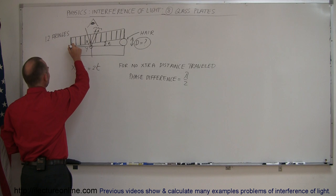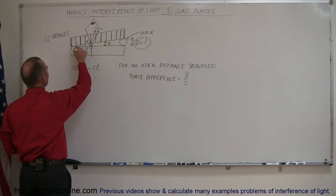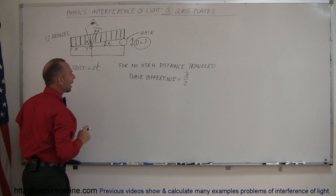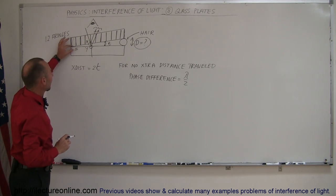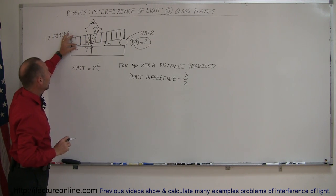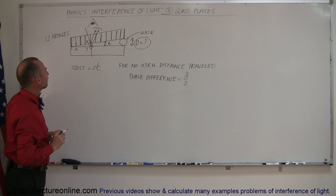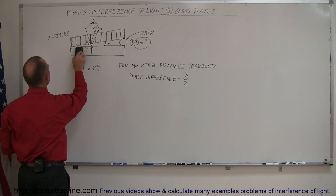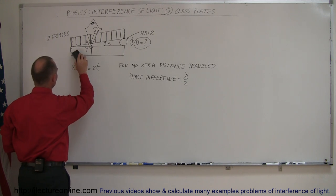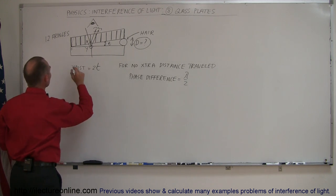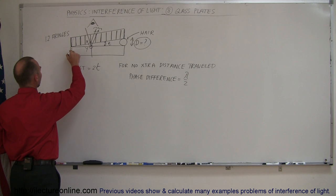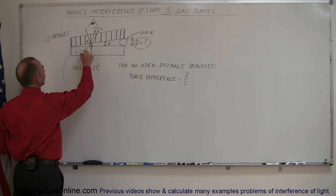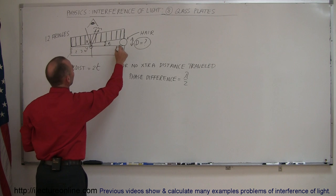So the path length difference at the start is zero. The path length difference at the next point would be 2t. Let's label the fringes: fringe 1, fringe 2, fringe 3, fringe 4, all the way up to fringe 12.